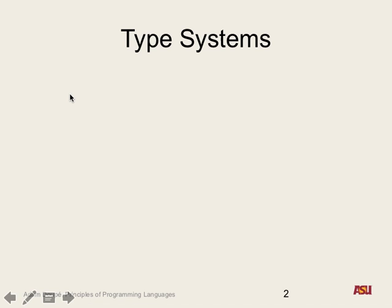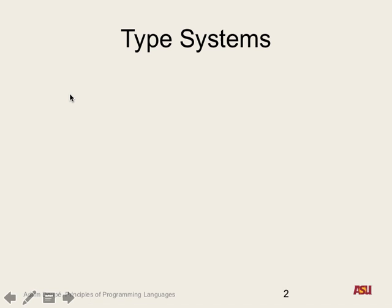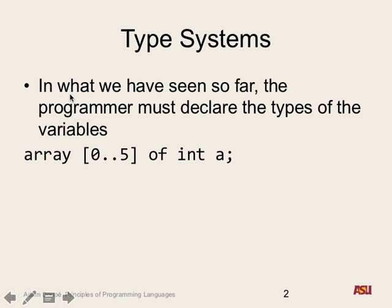Who gives it? The programmer, right. So the programmer is explicitly declaring the types of variables. They say, I want a variable foo, and it has this type bar. We've seen that with all kinds of examples — like arrays where we give the range of the array and the type of the elements.